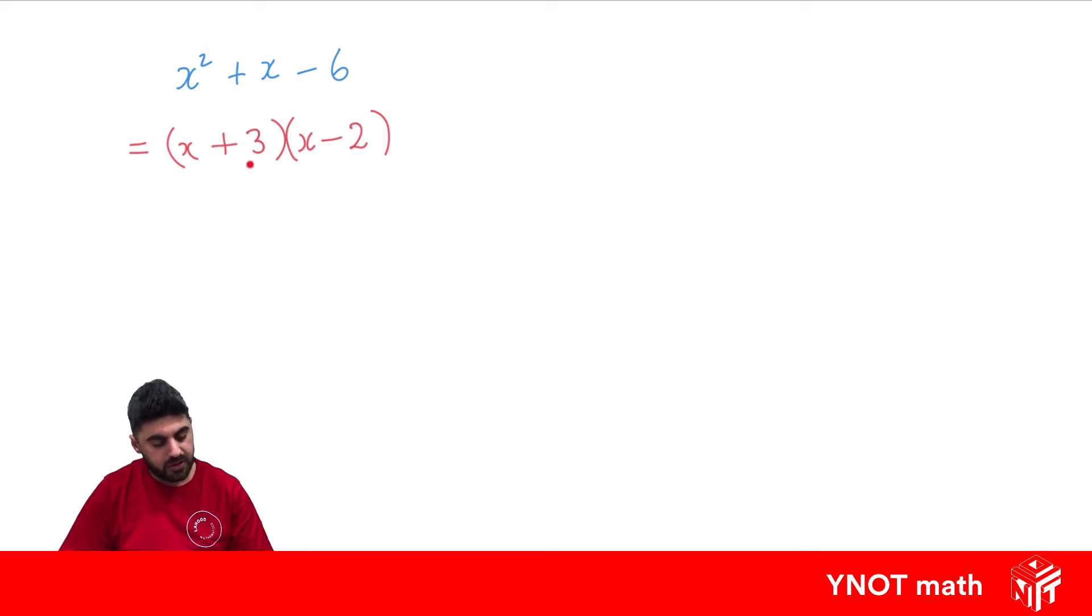Because +3 × -2 gives us -6, and 3 - 2 gives us 1, exactly what we need. We could expand and check, but I'll save that for you.